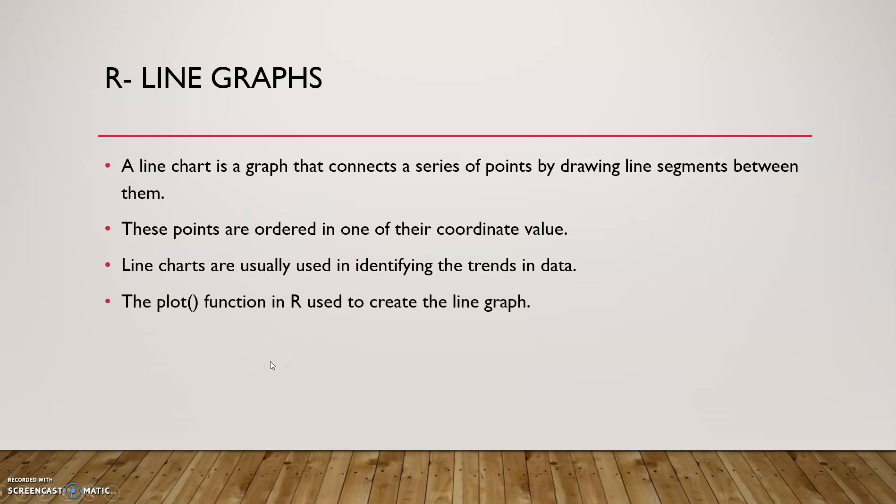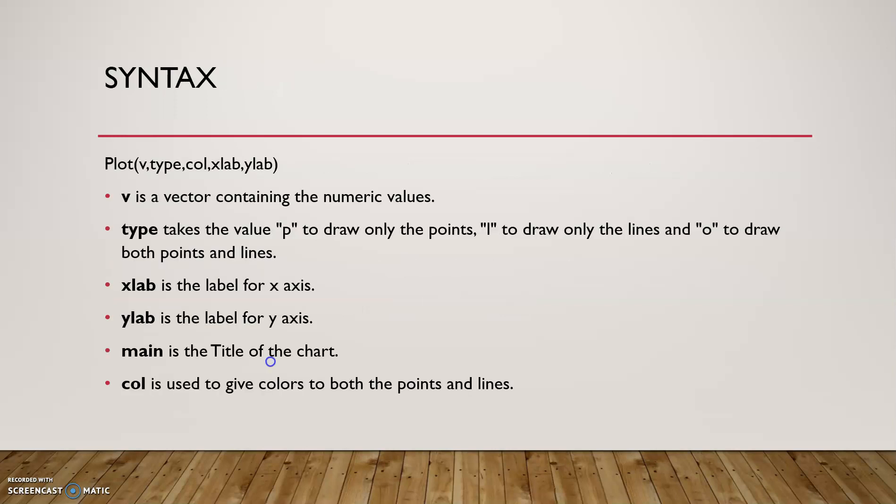Line chart. A line chart is a graph that connects a series of points by drawing line segments between them. These points are ordered in one of their coordinate values. Line charts are usually used in identifying trends in data. The plot in R is used to create line graphs.